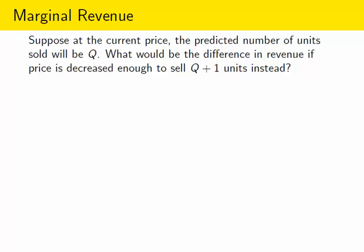Here's another way of thinking of the question we just asked that's going to allow us to figure out how to use calculus to work with this kind of question. Suppose you're charging a current price that would predict you're going to sell Q units at that price. If you change the price in order to sell Q plus one units instead, how much will that change your revenue? So you can think of what we're doing is just asking what's the difference in revenue? If you imagine that we could get a certain revenue from selling Q plus one units and a different revenue from selling Q units, what would the difference between those two numbers be? That's the marginal revenue.